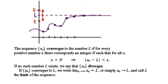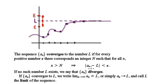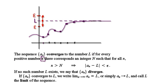If you've been working through the videos, then by now you should have a rough idea of what it means for a sequence to converge and what it means for a sequence to diverge. Now we're going to look at the precise definition. So the sequence an will converge to the number L, if for every positive number epsilon. You can think of epsilon as being your tolerance, your level of tolerance.